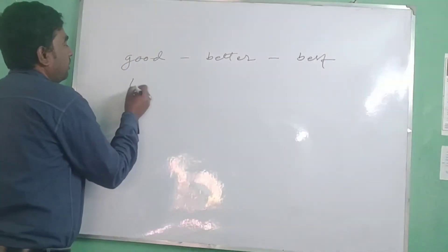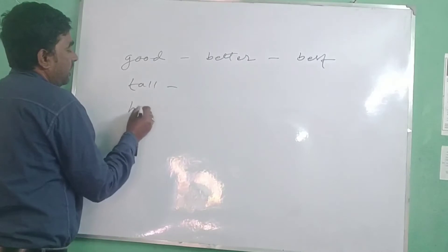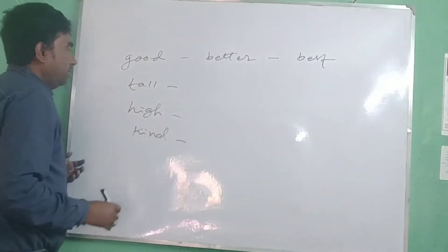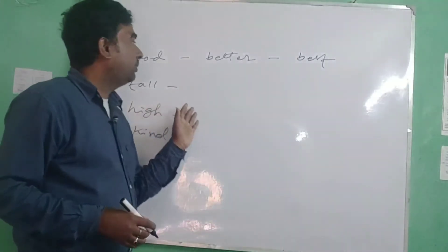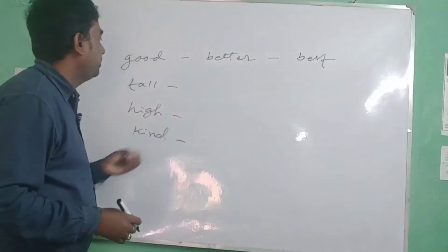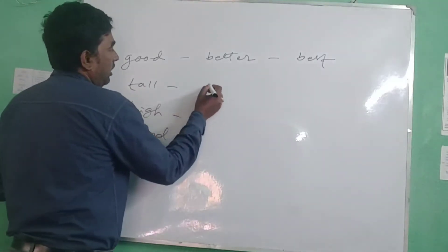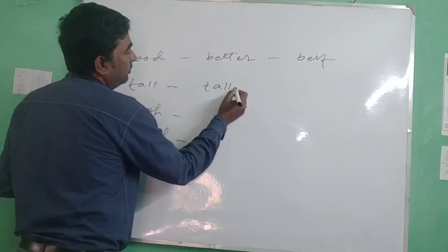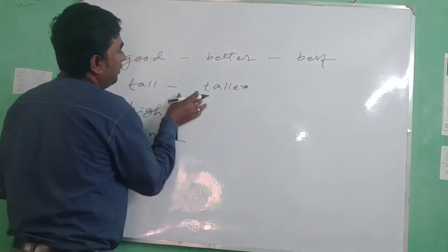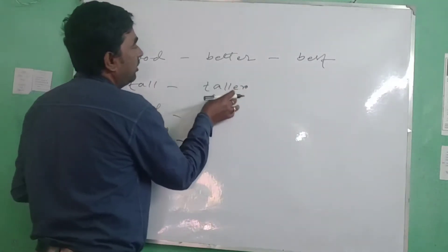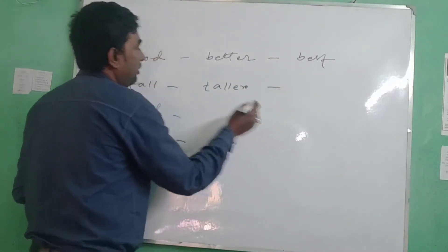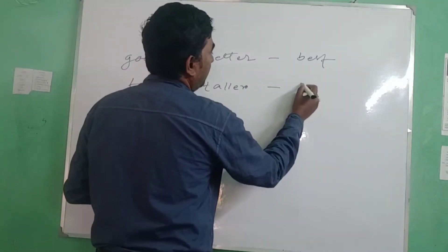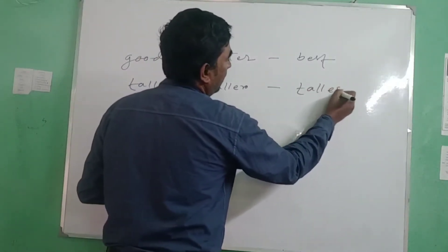There are so many words in the English dictionary, like tall, high, kind, and so on. When you transform these words into comparative degree, you have to add '-er' to these words. For example, 'tall' becomes 'taller' in comparative degree. When you add '-est,' it becomes superlative degree: 'tallest.'